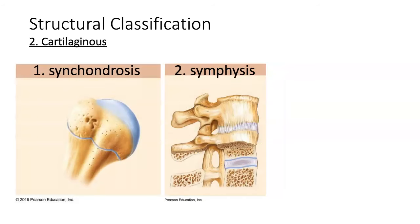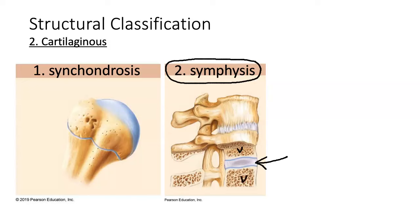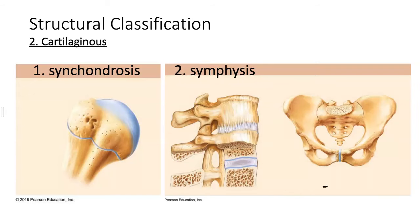Another category of cartilaginous joints is called a symphysis. In a symphysis, the bones are united by a pad of fibrocartilage. For example, the intervertebral discs between two vertebrae represent a symphysis. Another example is the pubic symphysis, where fibrocartilage unites the right and left pubic bones.